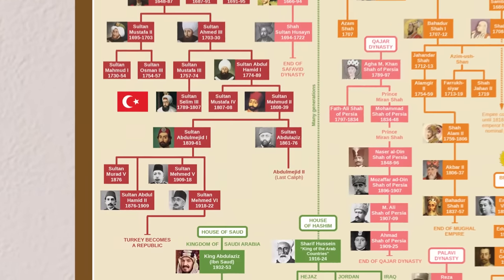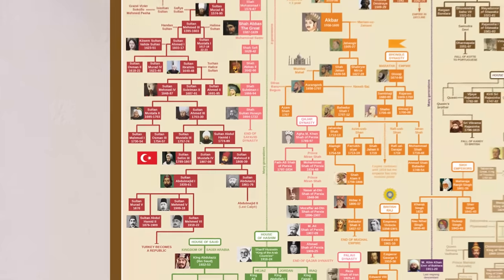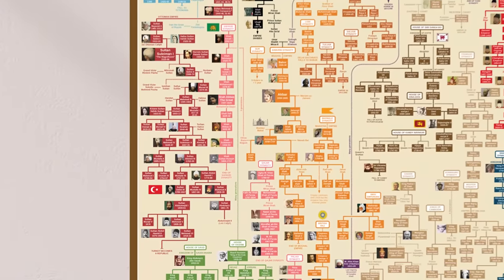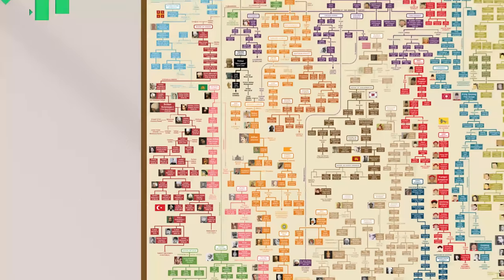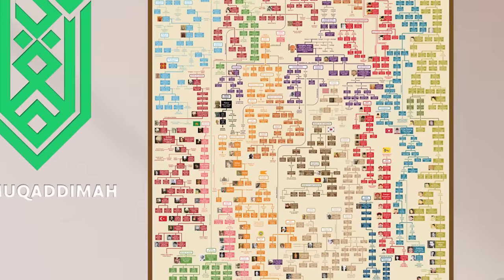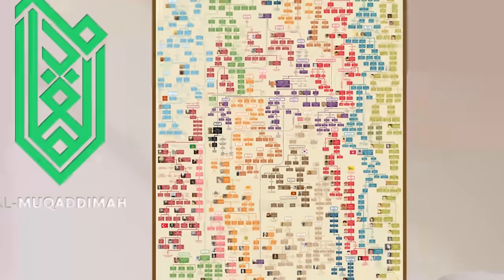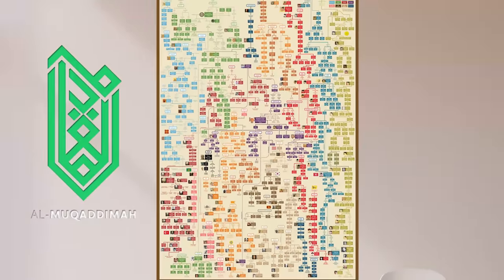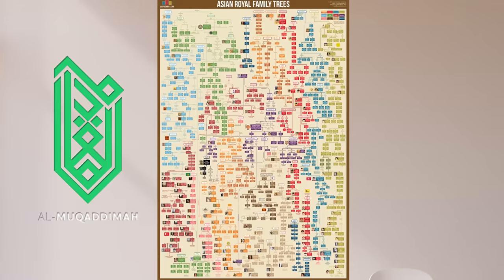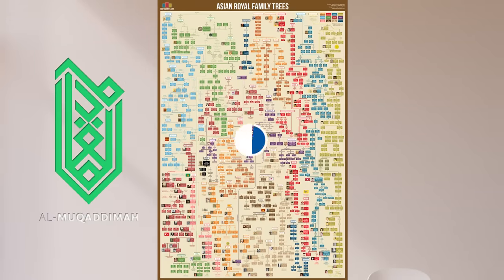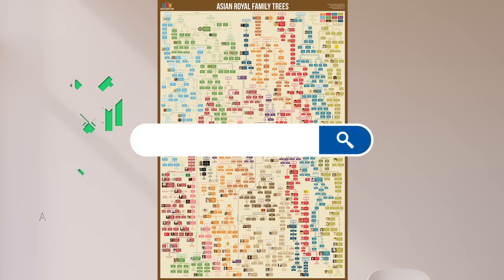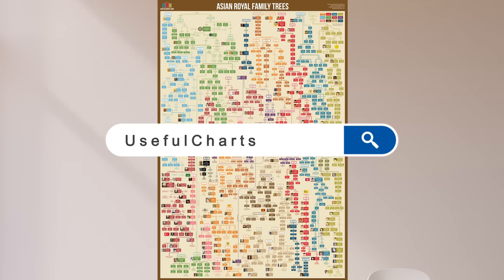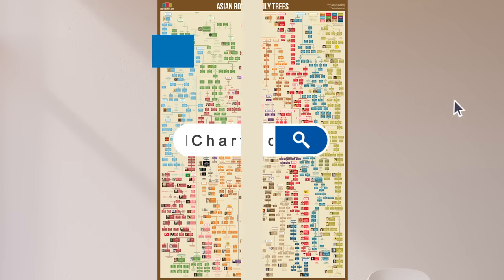So that was the family tree of the Ottoman dynasty. If you're interested in learning more about Islamic history, check out my channel Al Muqaddimah by clicking the link in the description, or if you want to buy the poster shown in the video, you can head over to UsefulCharts.com. Thank you for watching.